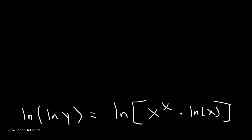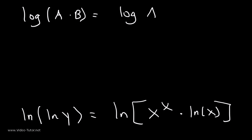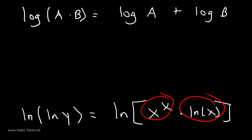Now we need to use the product rule for natural log functions — not the product rule of derivatives, but the log product rule. For example, log(a·b) is equal to log(a) plus log(b). So we need to separate x to the x and ln(x) using that property of logs.